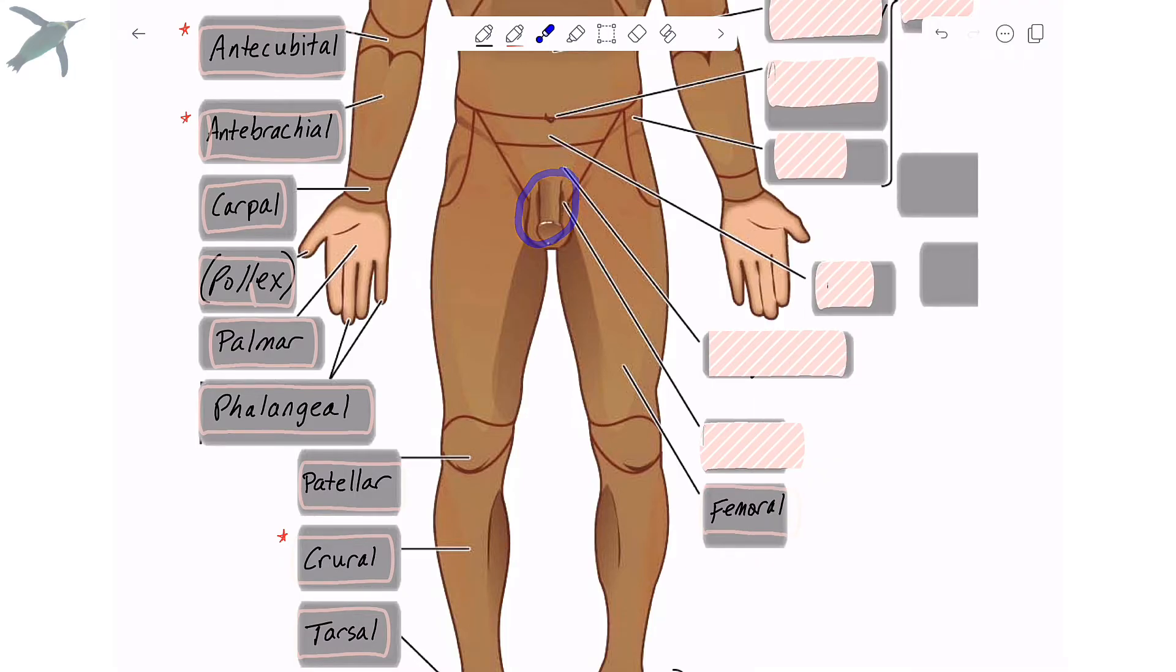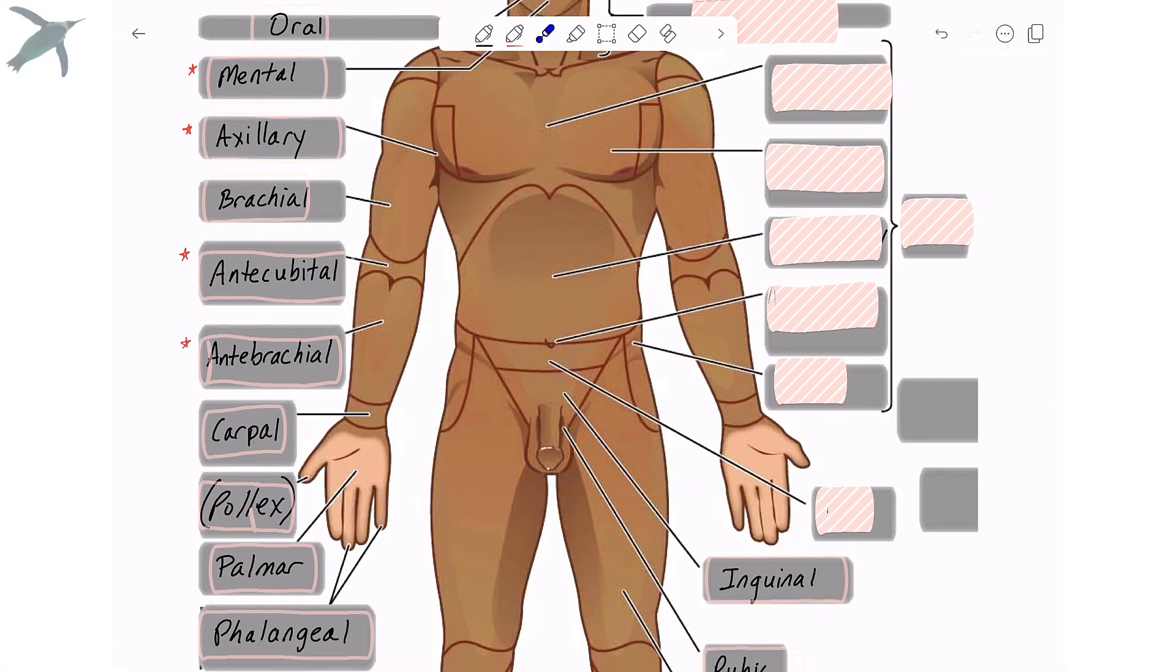The area where the external genitalia are, we refer to as the pubic region. A larger region, which encompasses the pubic region, is called the inguinal region or the groin. And the entire region, which is inferior to the abdominal region, is referred to as the pelvic region. The hip, right here, we call coxal.